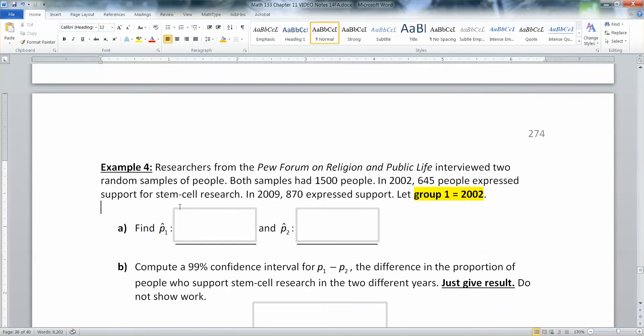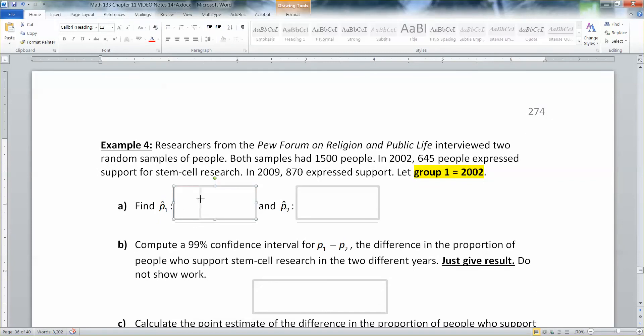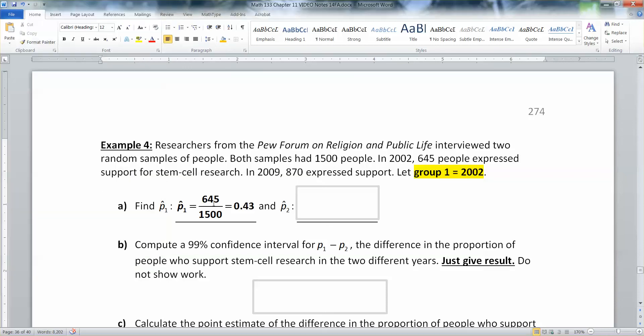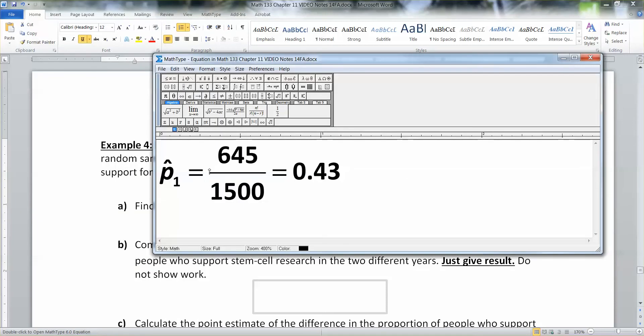Now, p1 hat would be x1 over n1, right? So if it's x1 over n1, that would be 645 divided by 1,500, which makes a value of 0.43. If you don't believe me, 645, you really won't believe me if I don't type it correctly. So I divided by 1,500. There we go.